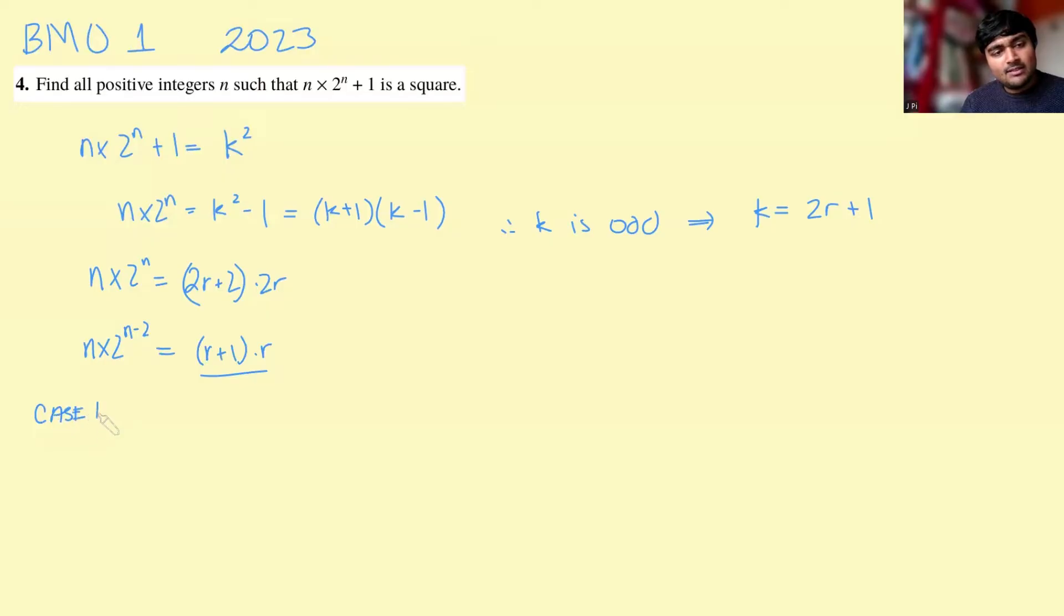So case 1 is if r is the even number. Now, if r is even, that means r plus 1 is odd, but we need it to equal n times 2 to the n minus 2. So this left-hand side here is clearly a multiple of 2 to the n minus 2. But since r plus 1 is odd, that 2 to the n minus 2 has to be coming from r. So we can conclude that if r is even, it must be a multiple of 2 to the n minus 2.